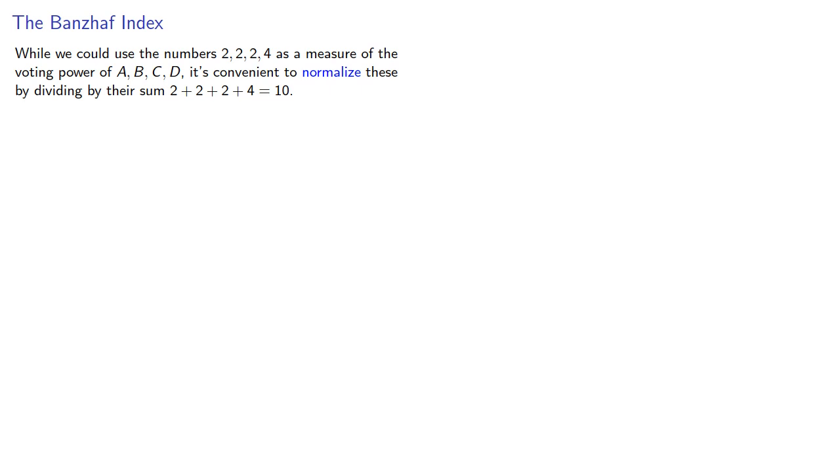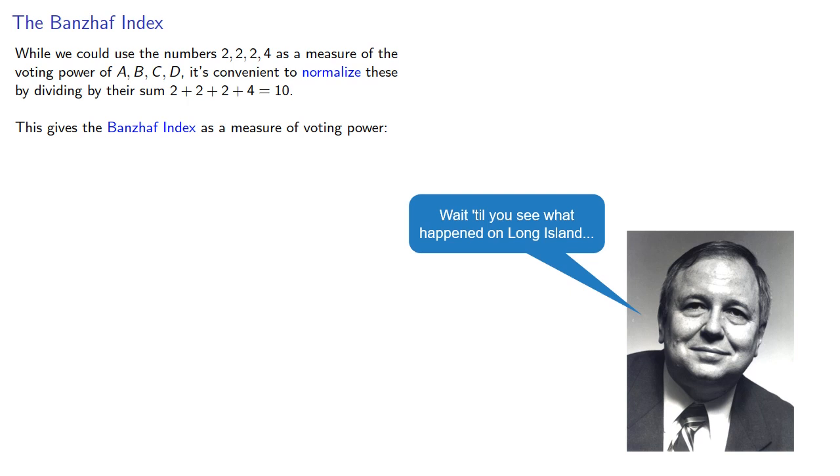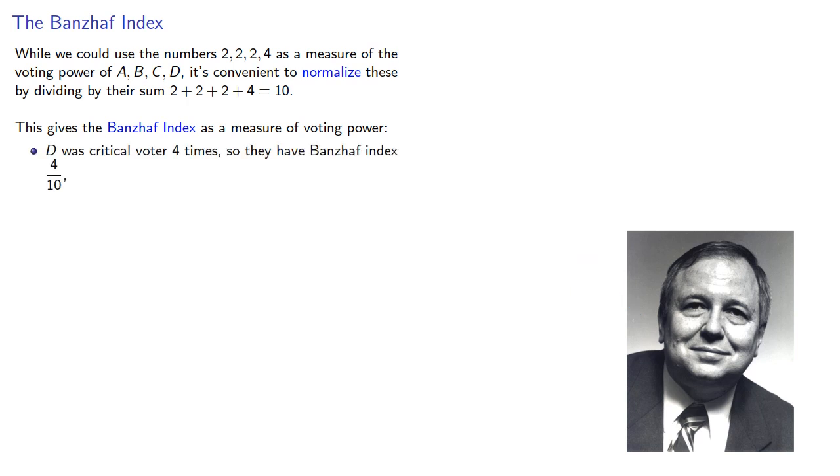This gives the Banzhaf index as a measure of voting power. D was critical voter four times, so they have Banzhaf index 4/10. A, B, and C were critical voters two times, so their Banzhaf indices are all 2/10.